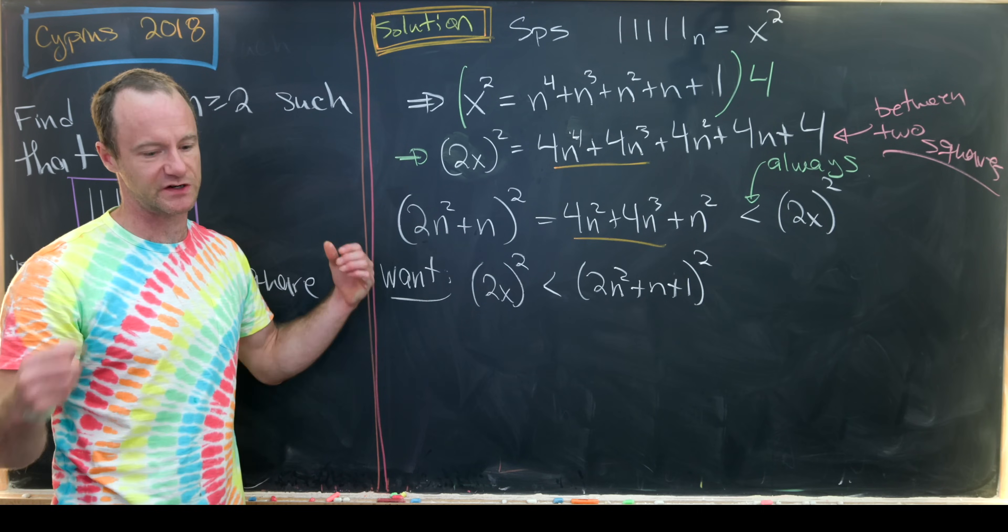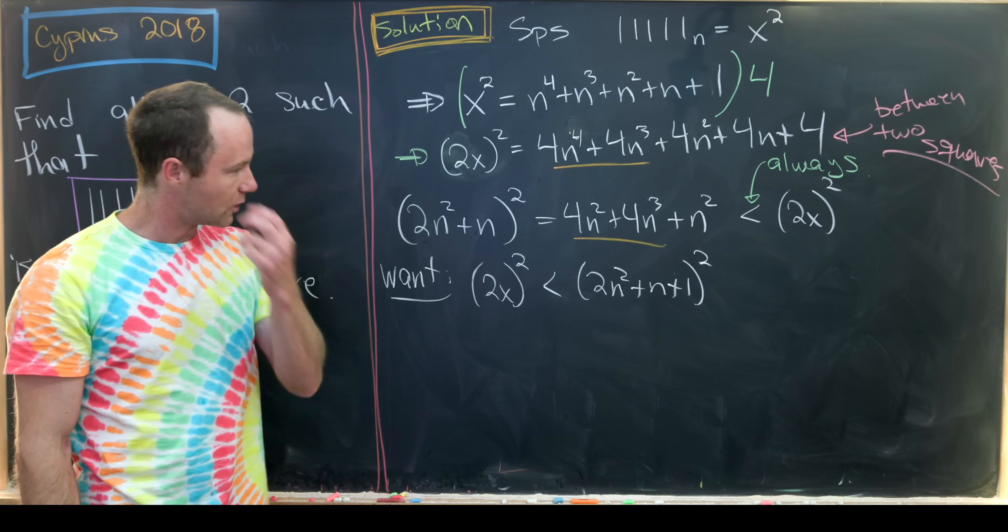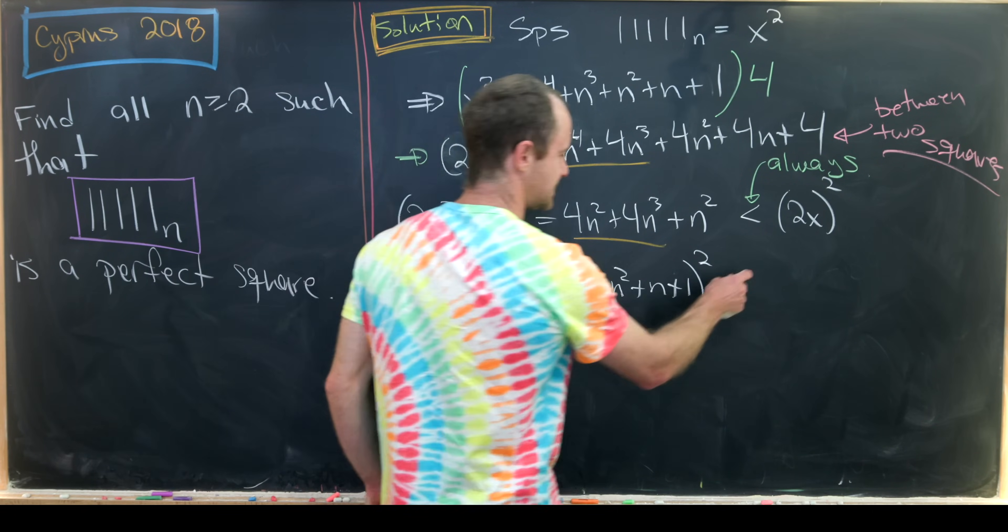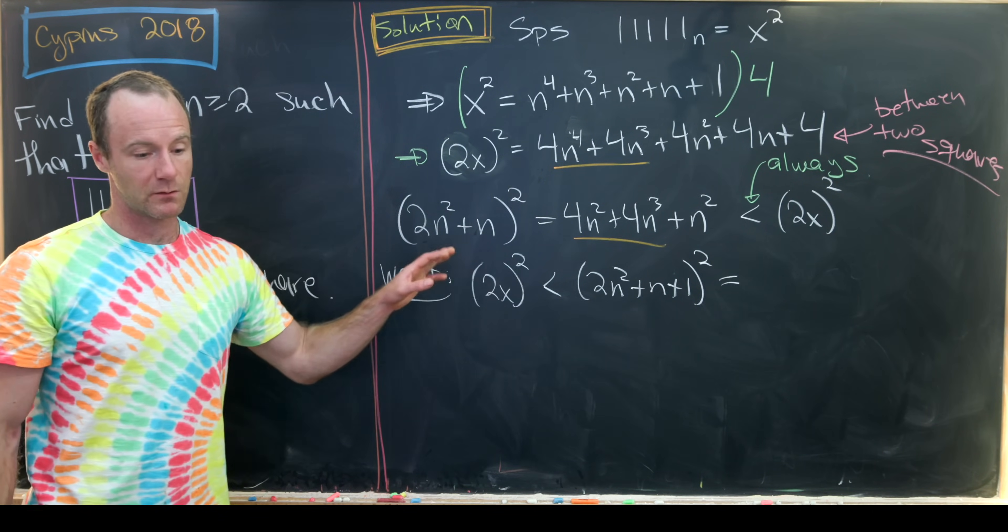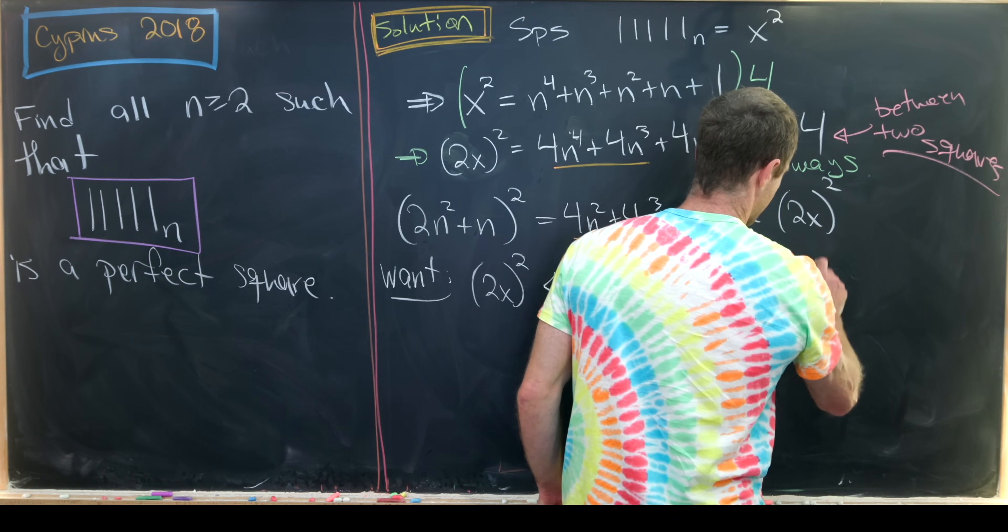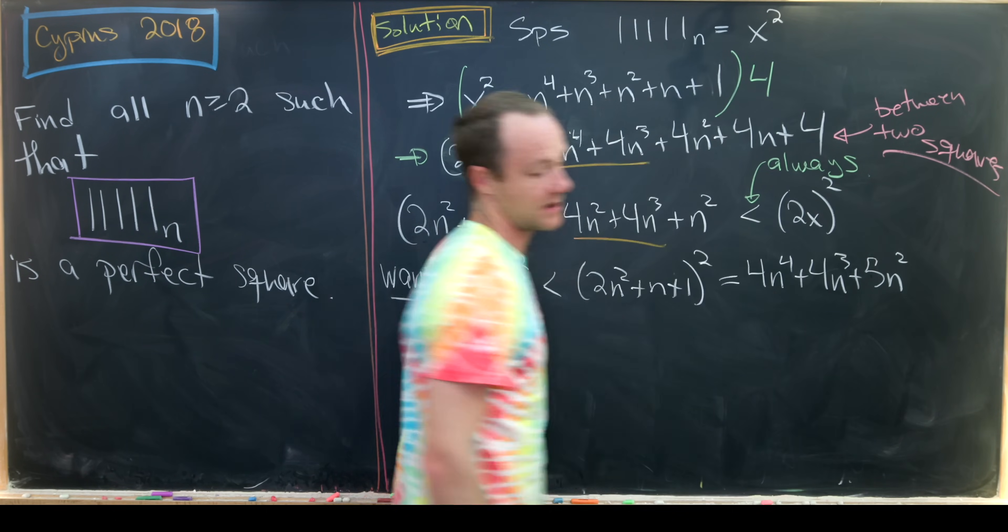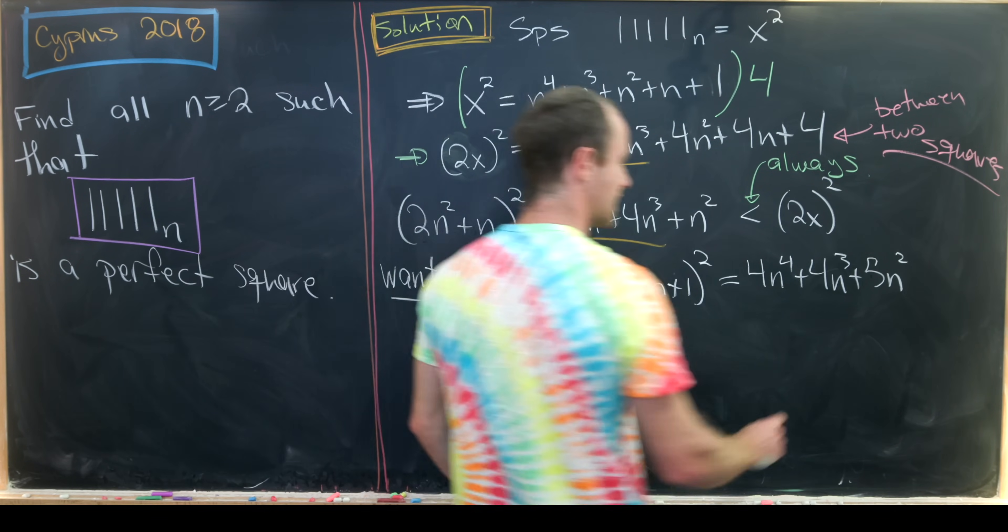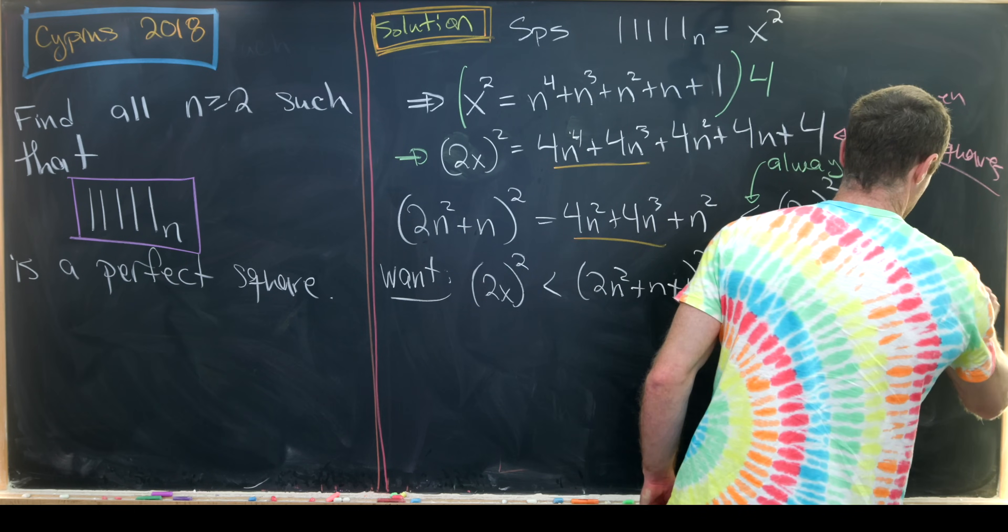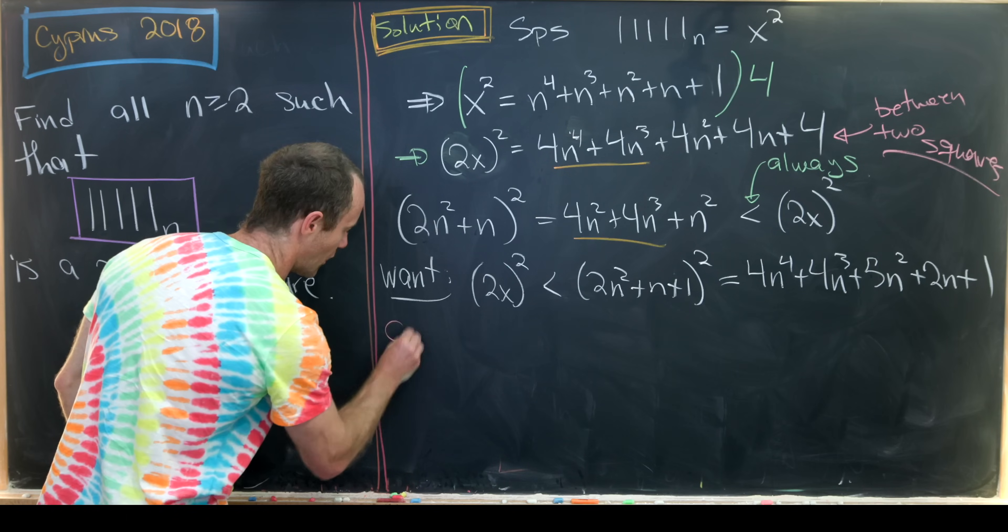Okay, so let's maybe multiply this out and see what that really gives us. Multiplying this thing out will give us 4n to the fourth plus 4n cubed plus 5n squared plus 2n plus 1. Okay, great. And that motivates the following question.